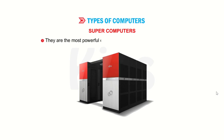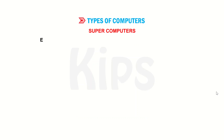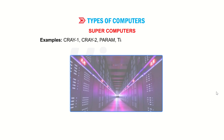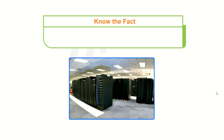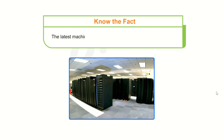Supercomputers are the most powerful computers with huge processing speed. These computers are used for weather forecasting, space research, satellite control, etc. Examples include Cray-1, Cray-2, Param, Tianhe-2, and Sunway TaihuLight. Param is a series of supercomputers designed and assembled by the Centre for Development of Advanced Computing (CDAC), India. The latest machine in the series is the Param Kanchenjunga.